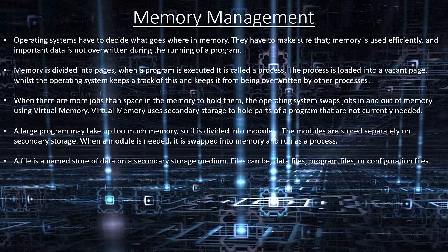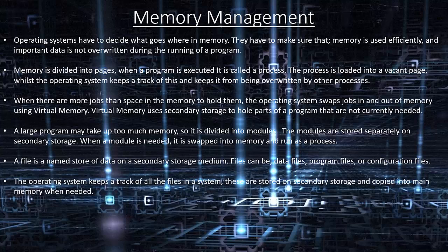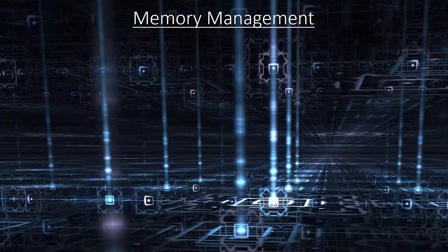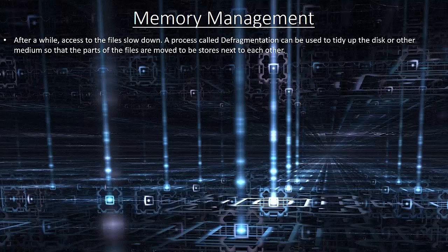A file is a named store of data on a secondary storage medium. Files can be data files, program files or configuration files. The operating system keeps track of all files in the system, stored in secondary storage and copied into main memory when needed. Secondary storage is also divided into segments; files are often larger than the size of a segment, so they are split into blocks across many segments. Each block contains pointers about the location of the next block, so the operating system can follow the pointers to recover the file. After a while, access to the file is slowed down. A process called defragmentation can be used to tidy up the disk so that parts of files are stored next to each other.